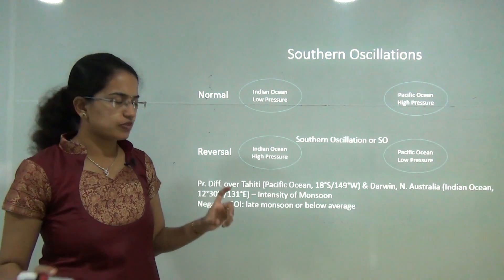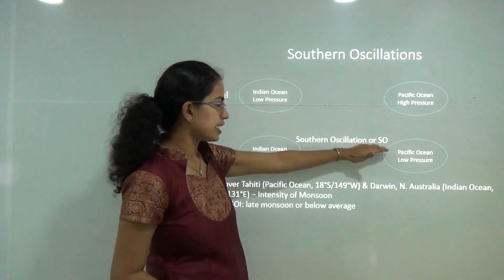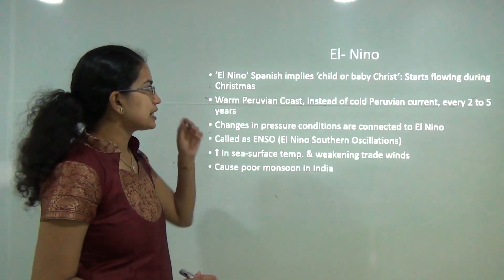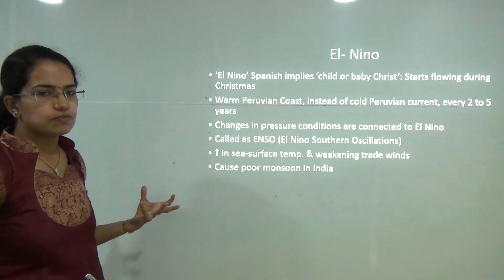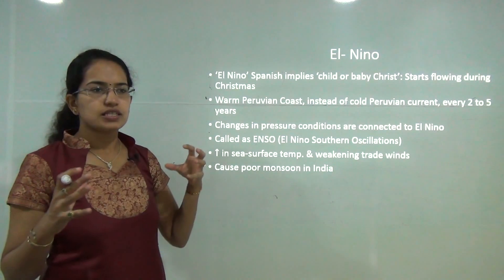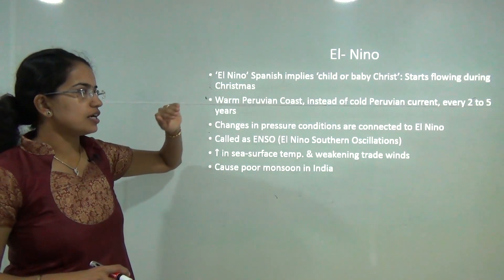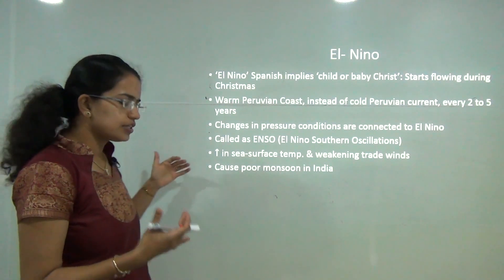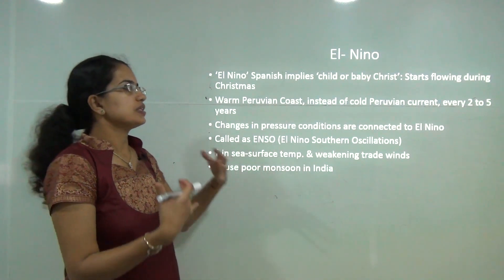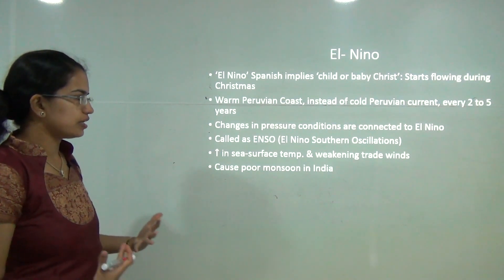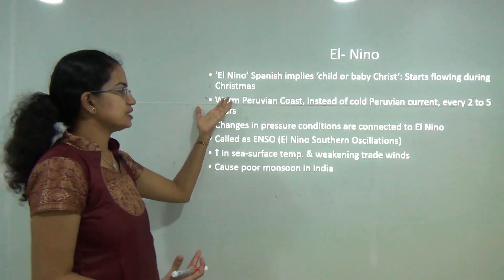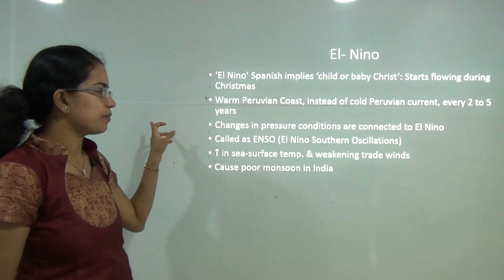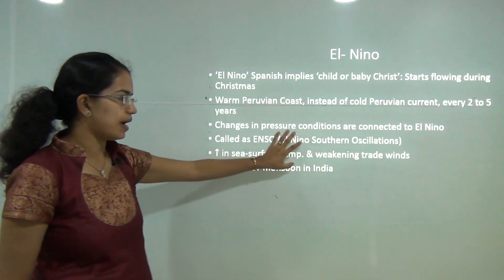Southern oscillations determine the intensity of the monsoon. A negative Southern Oscillation Index means late monsoons or below-average rainfall. El Niño is a Spanish term meaning 'child' or 'baby Christ,' named because it starts around Christmas time. Instead of the usual cold Peru Current, the current becomes warm every 2 to 5 years, causing changes in pressure conditions that lead to El Niño Southern Oscillations (ENSO). These are amplified by El Niño's impact.